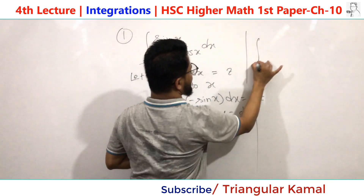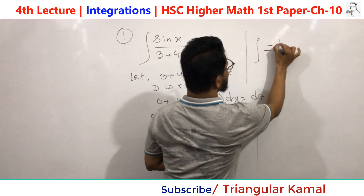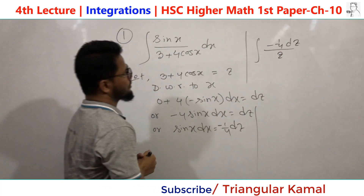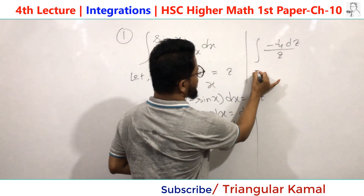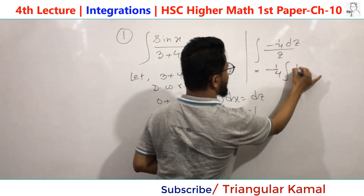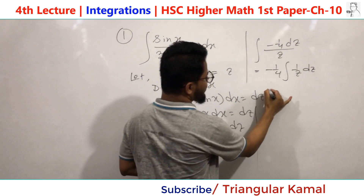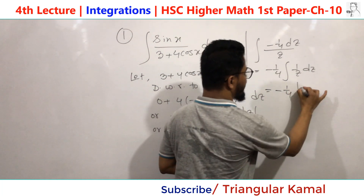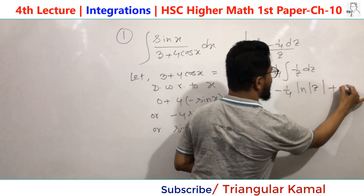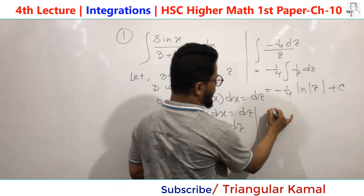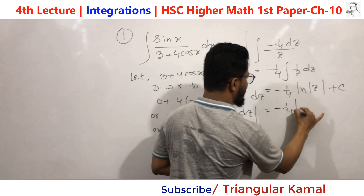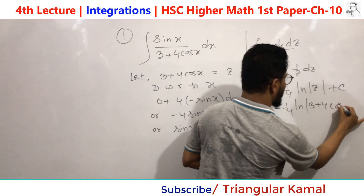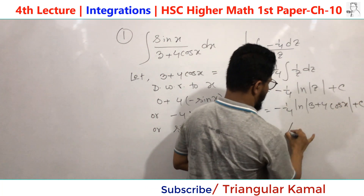The integral becomes −(1/4) ∫ (1/z) dz. Using the simple formula ∫(1/z)dz = ln|z|, after integration we add constant c. Now applying the value of z: the answer is −(1/4) ln|3 + 4cos(x)| + c. This is our answer.